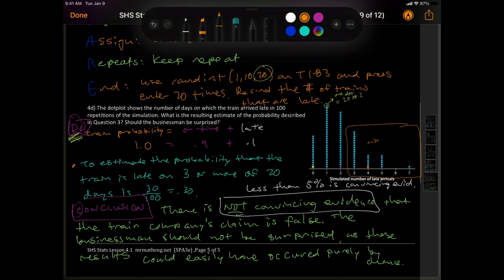Now, some people are asking me some questions like, you might have a question like, when is it convincing evidence? Or, when is it statistically significant? Up here, I just put in white there, less than 5% is convincing evidence.